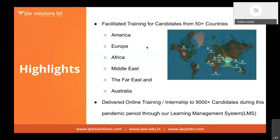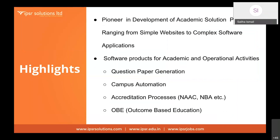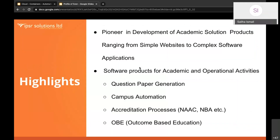During the last two decades, IPSR has associated with 250 academic organizations including universities, autonomous colleges, and technical and non-technical institutions. We are a Red Hat training partner and have received awards for delivering quality training in India and overseas. We've facilitated training for candidates from 50 plus countries and delivered online training to 9,000 plus candidates during the pandemic. We have also pioneered academic solution products ranging from simple websites to complex software applications. Let's move on to the session — over to you, sir.